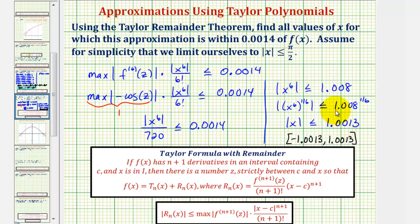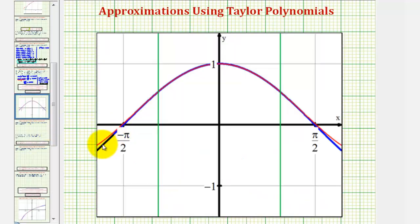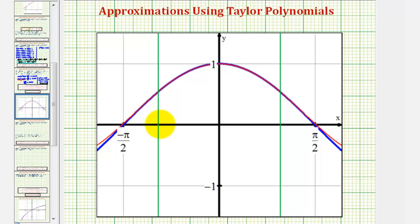Let's take a look at this graphically. In blue we have the graph of the original function f of x equals cosine x, and in red we have the graph of our Taylor polynomial centered at zero. We found that on the closed interval from negative 1.0013 to positive 1.0013, the Taylor polynomial approximation will be within 0.0014 of the true function value of f of x.